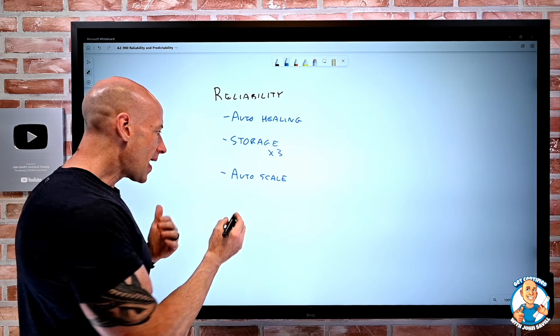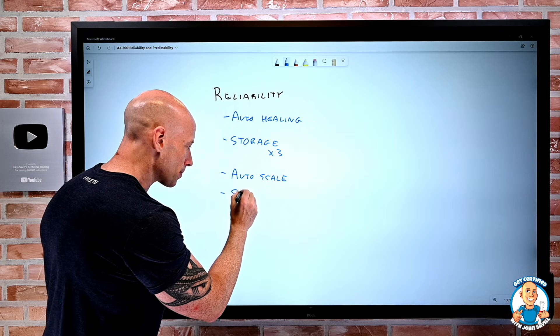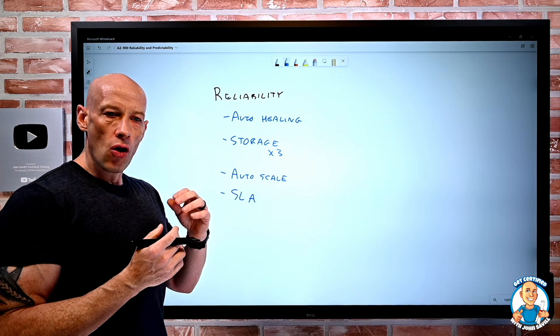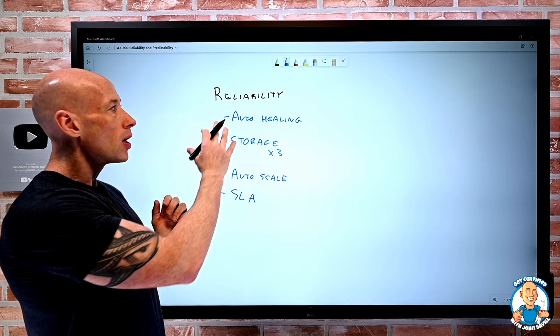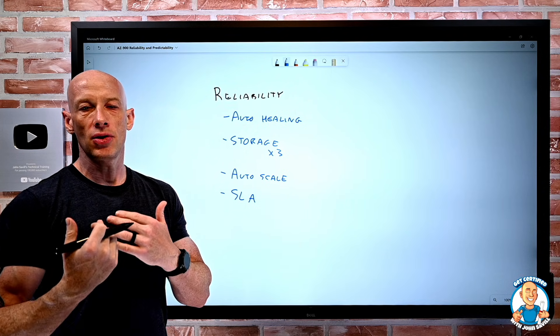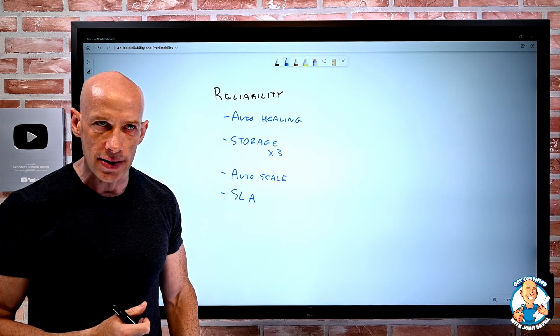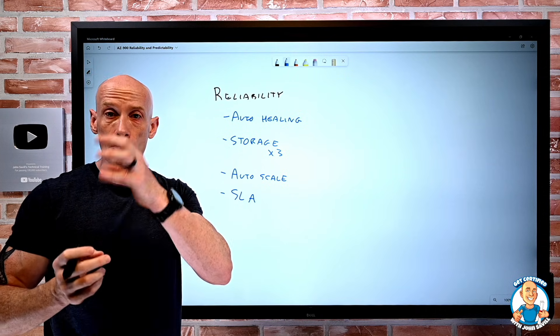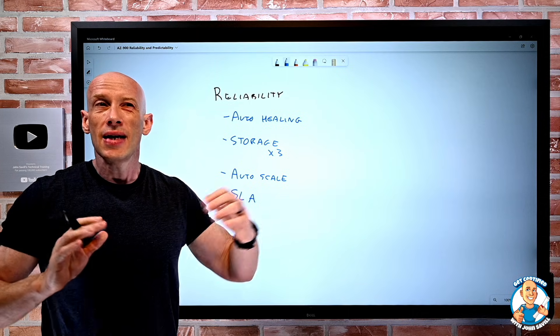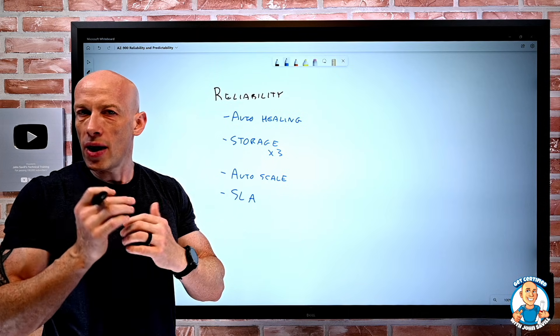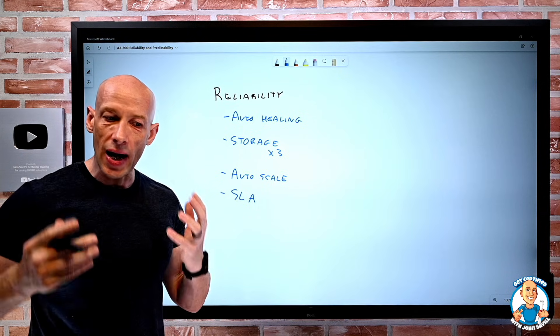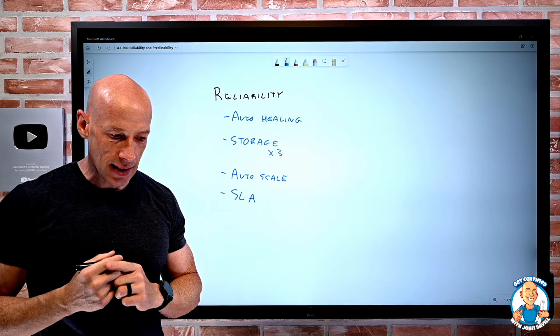Azure services have a certain SLA. We can go and look at the service level agreement of each service, and so when I think about reliability, that's the financially backed commitment from Azure for that service. Now, if my service is comprised of multiple different services, then I get a composite SLA, and that's going to maybe be higher or lower depending on if I need all of the services present, or is it an all relationship so it actually increases my SLA.